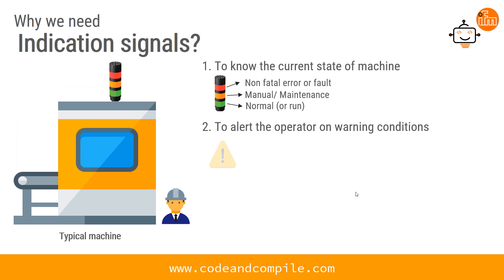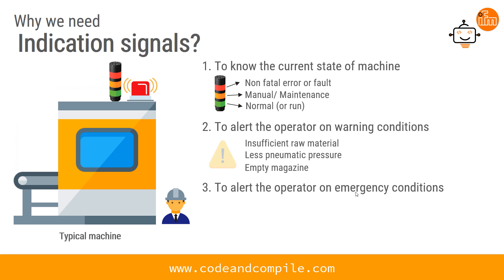The second reason is to alert the operator on warning conditions. Warning conditions could include insufficient raw material on the conveyor, less pneumatic pressure in the machine, or empty magazines. These indication signals are generally indicated by blinking lights.